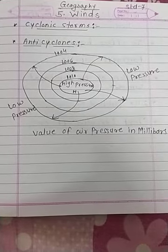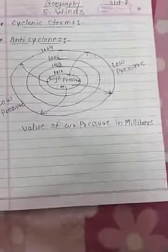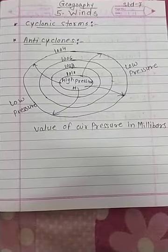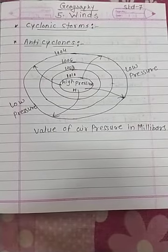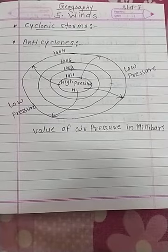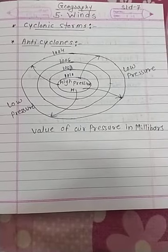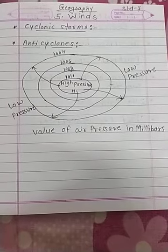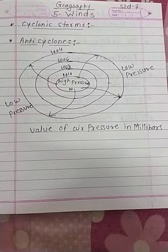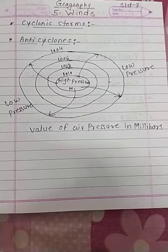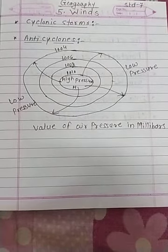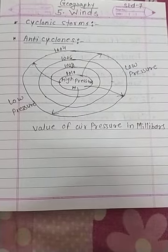Now, the naming of the cyclone. Cyclones occurring in different parts of the world are assigned different names. A list of names is prepared for each ocean or its part. Names in the list are suggested by the countries in the region of that ocean. If the wind speed in the storm exceeds 33 knots, that is 60 km per hour, the cyclone is assigned a name. Names make it easier for us to remember a particular storm and its intensity.